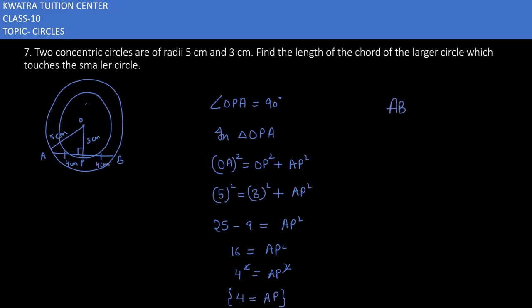Now you can write AB as AP plus PB. It will be 4 plus 4. It will give you 8 centimeters as the answer. This is the length of the chord of the larger circle which touches the smaller circle. It will be 8 centimeters in measurement.